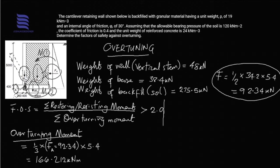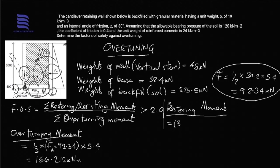Now for the restoring moment: the three forces holding the structure in a stable position are the weight of the wall, the weight of the base, and the weight of the soil. We have a clear diagram. The weight of the base is 38.4 kilonewtons. Taking moment about point A, the base is in total 4 meters — 700 plus 400 plus 2.9 meters. The perpendicular distance to point A from the centroid of the base will be 2 meters.